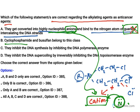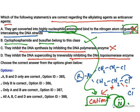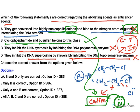Cyclophosphamide and busulfan do belong to the alkylating agent class — that is true. However, the claim that they inhibit DNA synthesis by inhibiting DNA polymerase is false; most antiviral drugs cause DNA polymerase inhibition, not these anticancer drugs. The claim that they inhibit DNA supercoiling by irreversibly inhibiting topoisomerase is also false — topoisomerase inhibitors are camptothecins like topotecan and irinotecan. So only option B is correct.